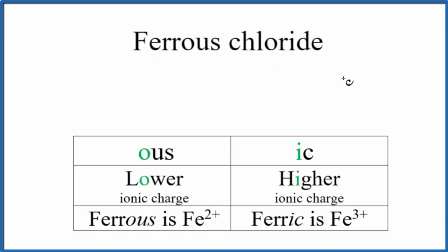When we see ferrous chloride, we need to realize that since we're using this older system, the 'ous' suffix means we have the lower ionic charge. For iron, we only have two possible charges here: Fe2+ or Fe3+.